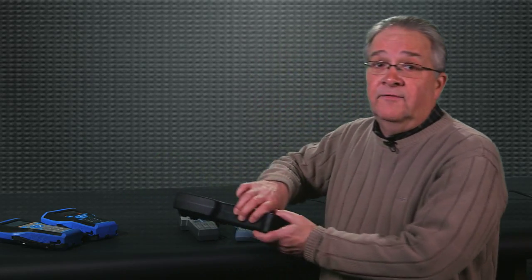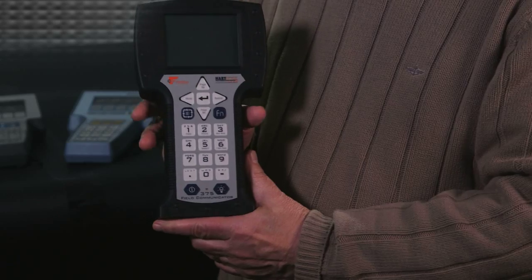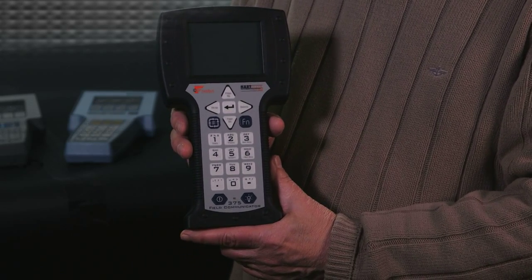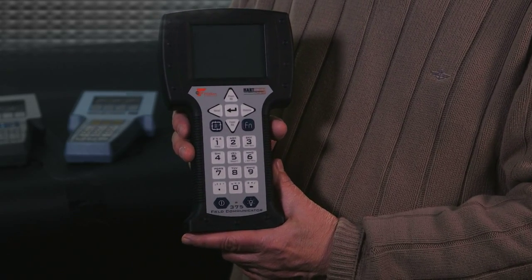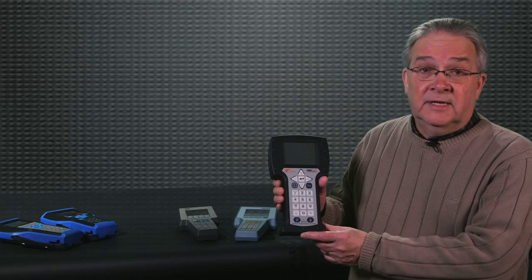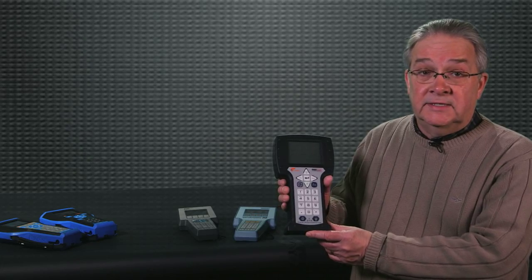In 2003 the 375 field communicator was introduced and this built on the success of the 275 and added the ability for the customer to do updates to the communicator itself as well as the ability to communicate with foundation fieldbus devices.